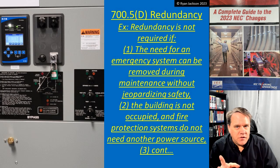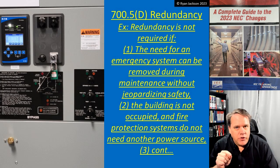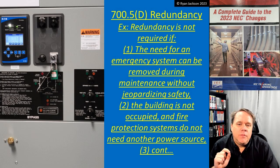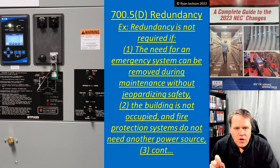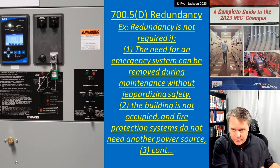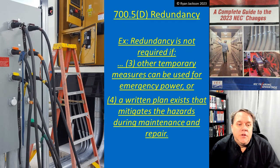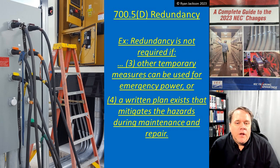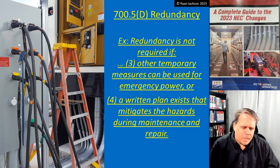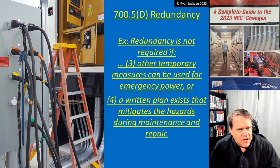Now, this redundancy requirement is not required if the need for an emergency system can be removed during maintenance without jeopardizing safety, or if the building is not occupied and the fire protection system like a fire pump does not need another power source, or if other temporary measures can be used for emergency power, or if a written plan exists that mitigates the hazards during maintenance and repair.